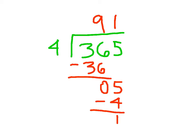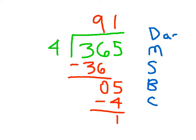We're going to introduce you to a family: we have a dad, we have a mom, we have a sister, we have a brother, and we have a cat. This is the division family. So again, we have a dad, a mom, a sister, a brother, and a cat.